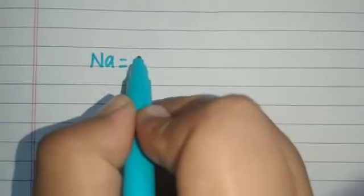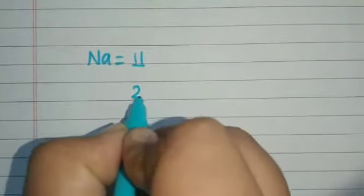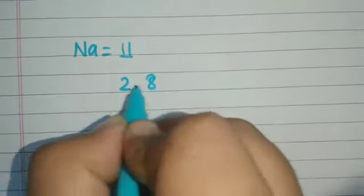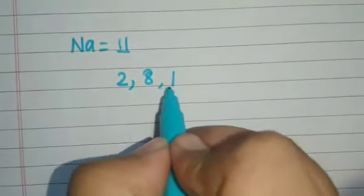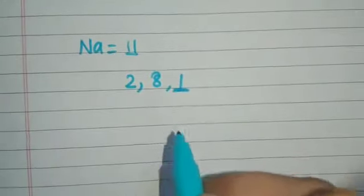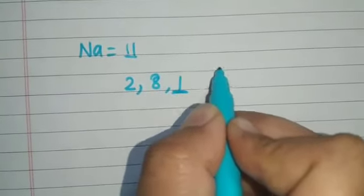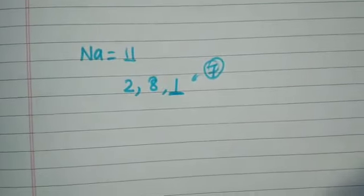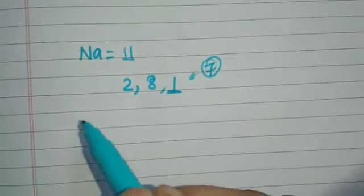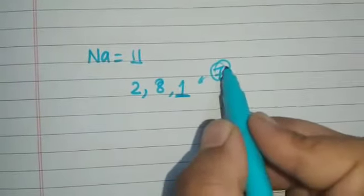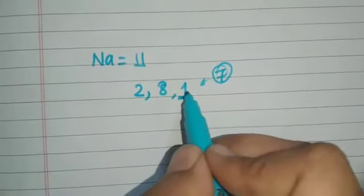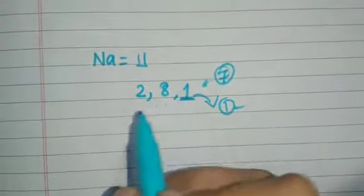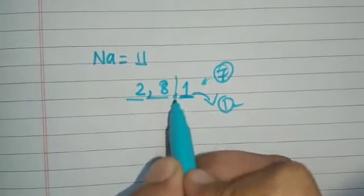Let us take sodium as an example. The atomic number of sodium is 11. So in the K shell it accommodates 2, next 8 in L shell, and 8 plus 2 is 10, so the remaining 1 electron is in the M shell — the outermost shell is not completely filled. It would require seven more electrons to complete the octet structure, but no other atom is ready to donate seven electrons. So instead of gaining, sodium will lose that one electron, and then the L shell becomes the completely filled outermost shell with 2 and 8.